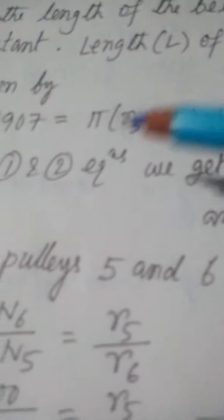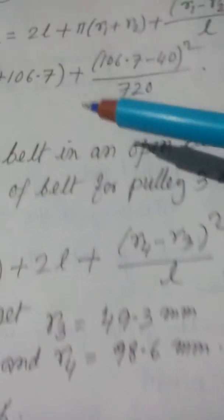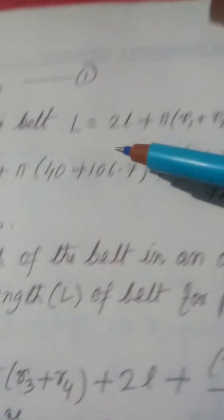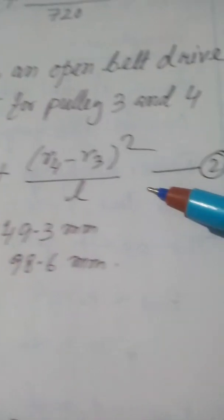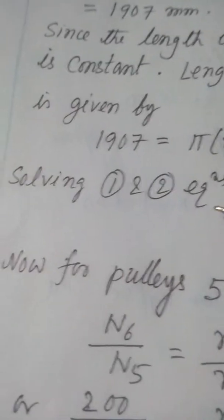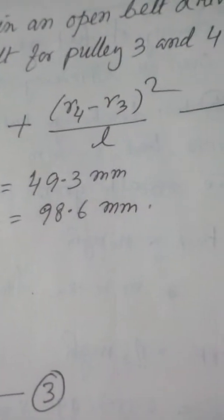Setting 1907mm equal to the open belt length formula with R3 and R4 gives Equation 2. We now have two equations — Equation 1 (R4 = 2R3) and Equation 2 (from belt length). Solving equations 1 and 2 together gives us the values of R3 and R4 in millimeters.